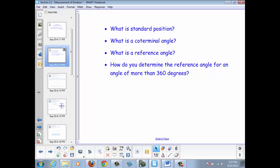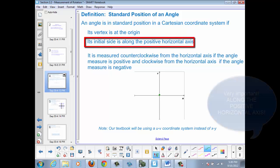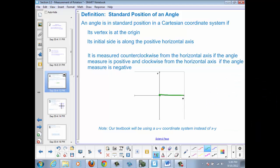Let's start with standard position. An angle is in standard position in a Cartesian coordinate system if its vertex is at the origin and its initial side is along the positive horizontal axis. So we're going to start at the origin, and that initial side along the positive horizontal axis is very important.